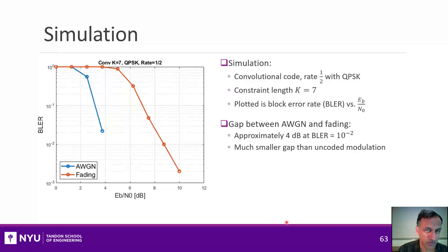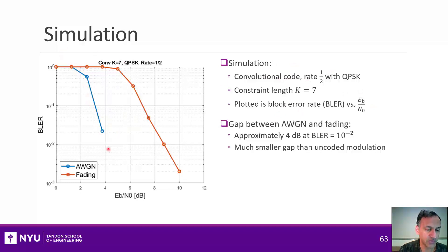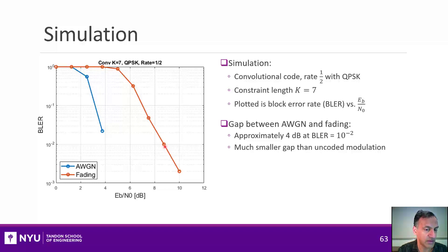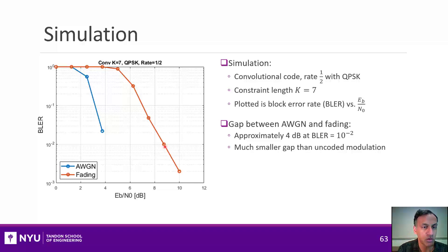If you get all those details correct, you can get good performance. Here is a vanilla convolutional code with a moderate constraint length. The blue line is what you get with AWGN — it needs about 4 dB at a block error rate of 10 to the negative 2. With fading it does worse, but not dramatically worse — about 8 or 9 dB. That 5 dB gap is not nothing, but this is much, much better than uncoded modulation, which needed dramatically more power. The lesson is that coding with all the correct details hurts with fading, but not nearly as badly as uncoded modulation.